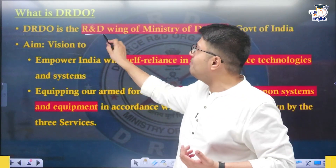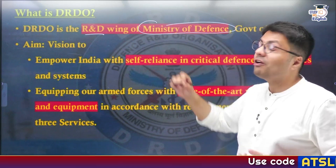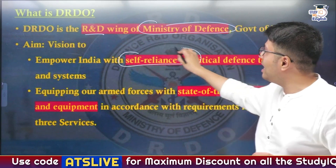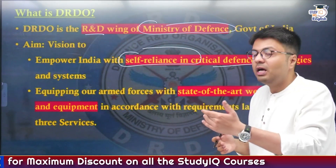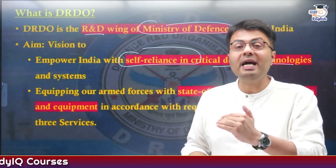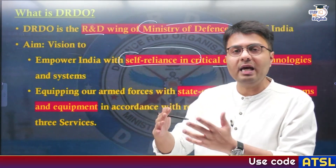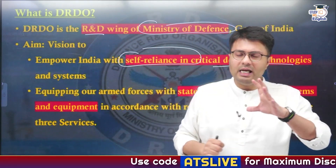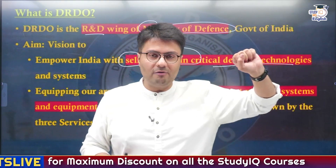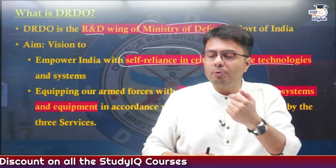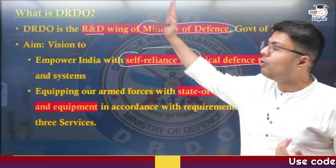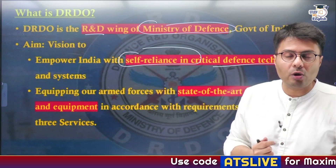DRDO functions as the R&D wing of the Ministry of Defense of the Government of India. The aim and intention of DRDO is, first of all, to empower India with self-reliance in critical defense technologies and systems. This is a more important objective because the Indian government wants to make India Atmanirbhar Bharat, and it also includes making our defense forces self-reliant. Historically, Indian armed forces have been dependent on imports for important missiles and armaments. But now, the Indian government is looking to procure these weapon systems, aircraft, and helicopters from Indian organizations, making DRDO's role as an R&D wing very important.